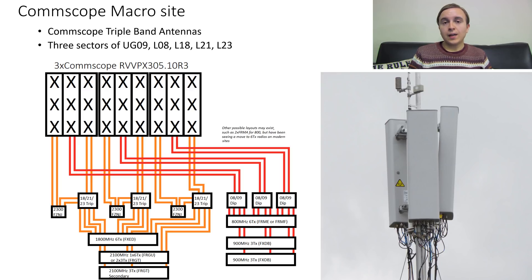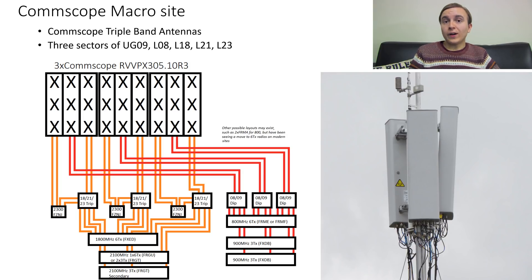For 800 MHz, it's the same setup as the last site: a 6TX 6RX radio, either FRME or FRMF, serving all three sectors. For 900 MHz, as this has 2G and 3G, I have gone with a pair of FXDBs. For high band, because this site has three sectors, a single FXED for 1800 MHz and a single FRGU for 2100 MHz would suffice — or alternatively a pair of FRGTs, which are 3TX 6RX.